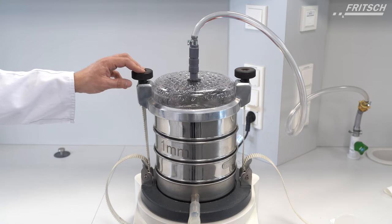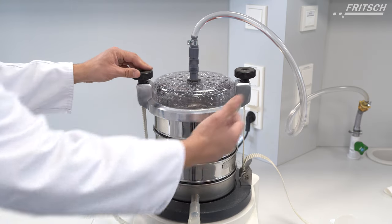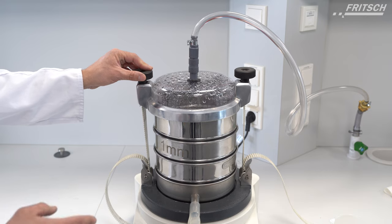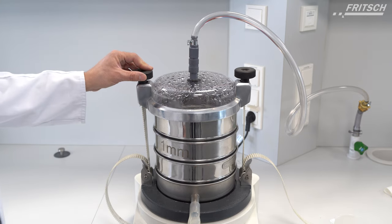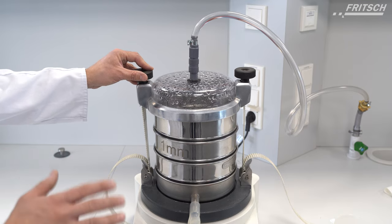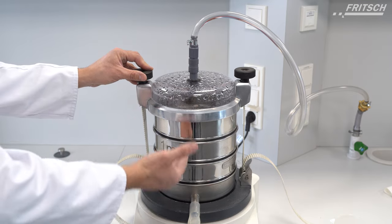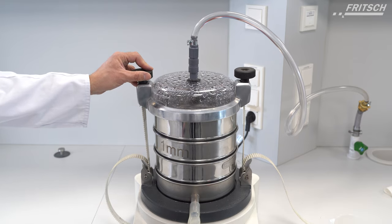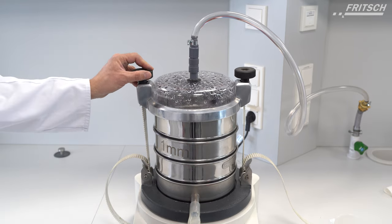Again, it is very important to have everything very tight. If no suspension is coming out, it is necessary to stop the process, because there is a risk that one of the sieves is clogged and no water can pass through.